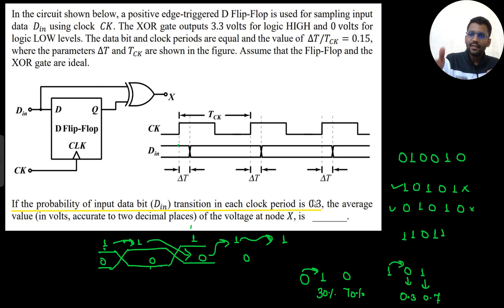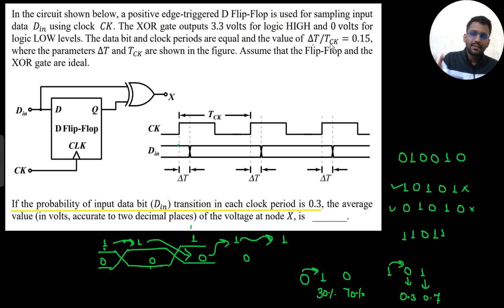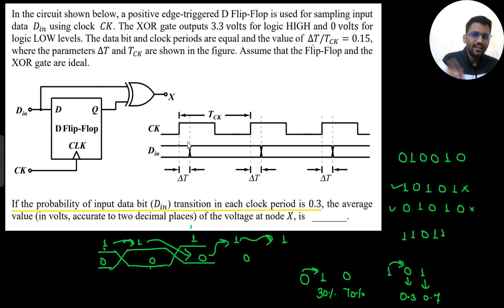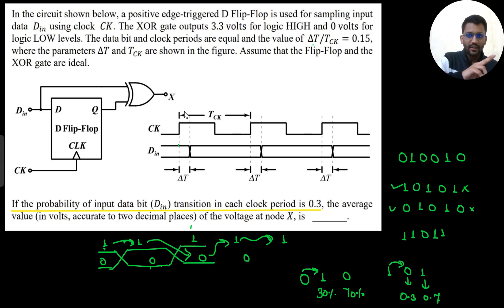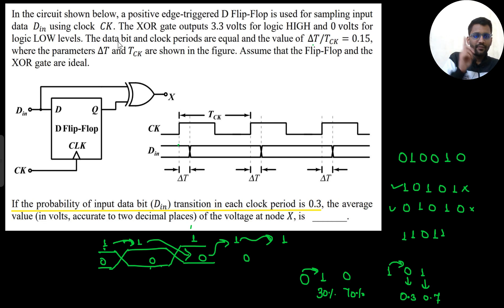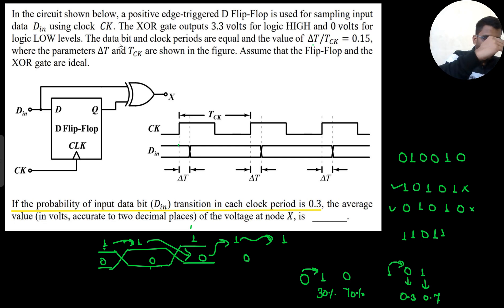This is a positive edge clocked D flip-flop and the ratio delta T by T_clock is given as 0.15, meaning data is leading by 0.15 of the clock period. The output voltage levels are given: 3.3 volts for logic high and 0 volts for logic low. So if output is 1, it will be 3.3V; if output is 0, it will be 0V.